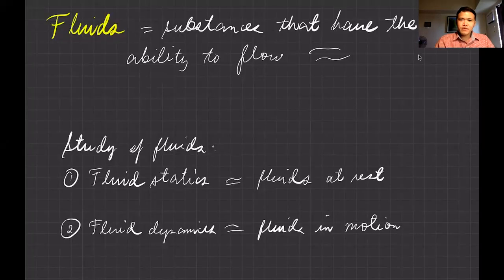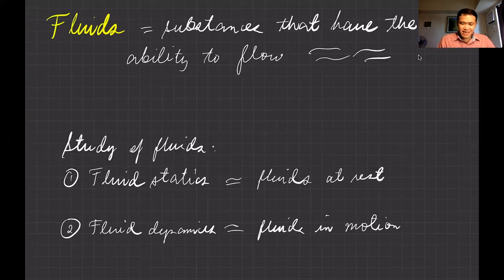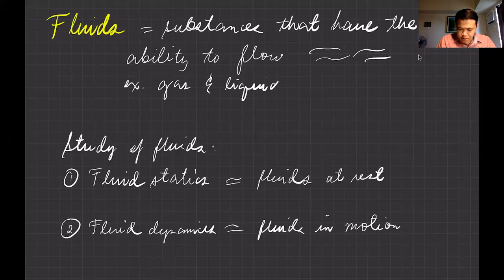Fluid mechanics studies how these substances behave. Examples of fluids are water, rivers, the oceans, our blood, swimming pools, and wind — the air that we breathe is a fluid. So let's define what a fluid is. Fluids are substances that have the ability to flow, and they can also be at rest.